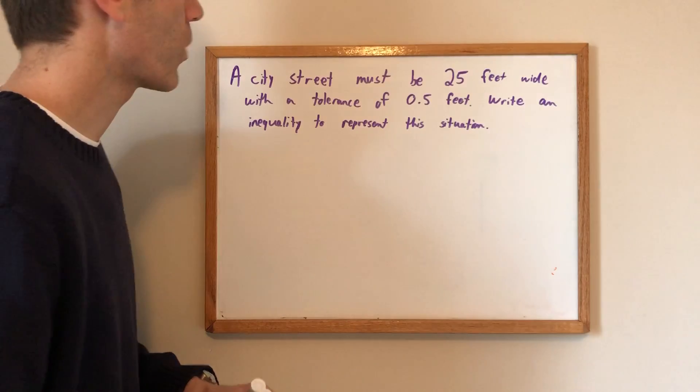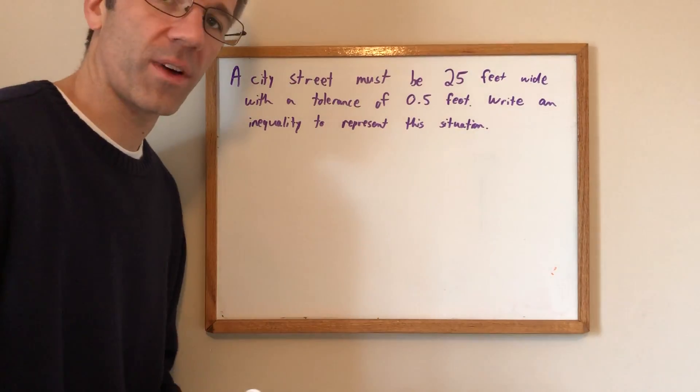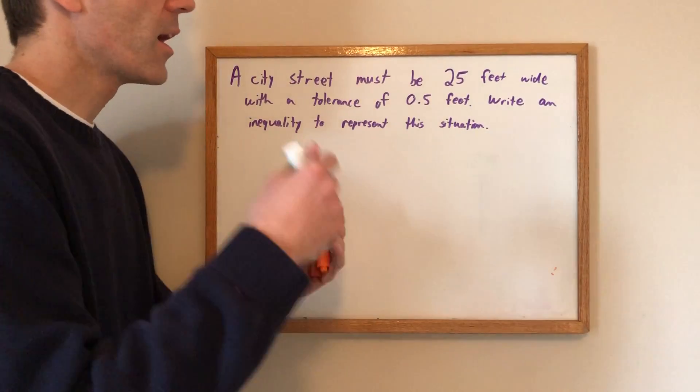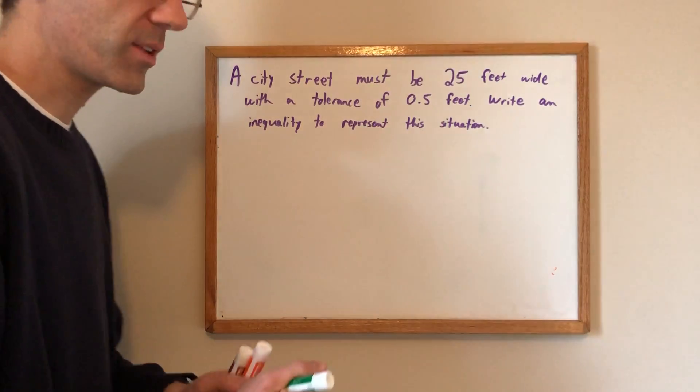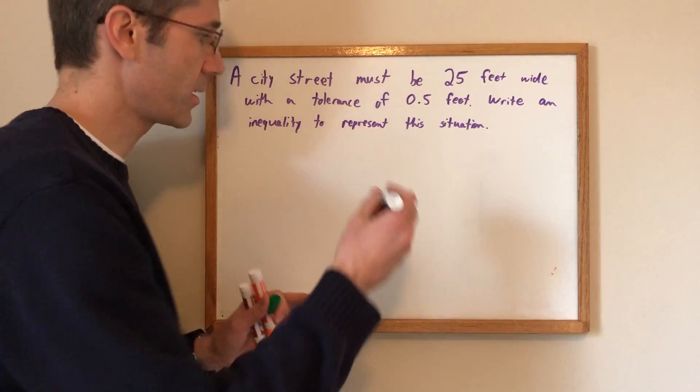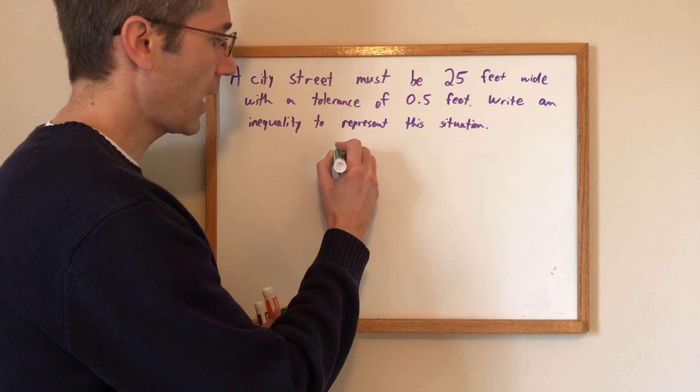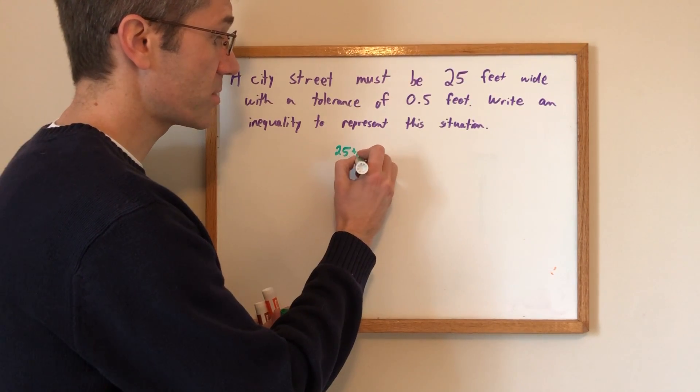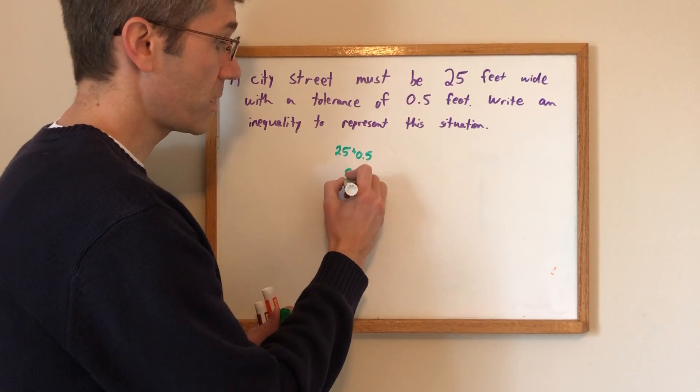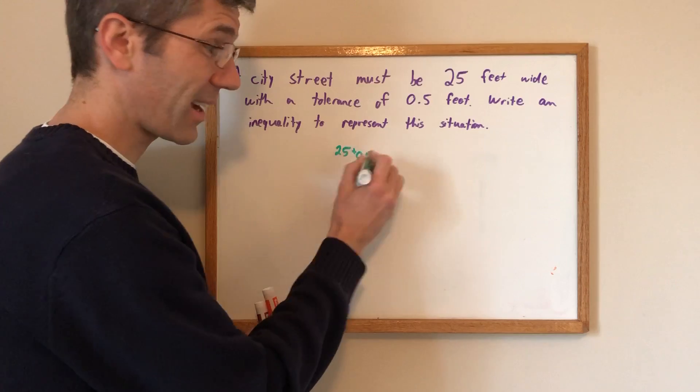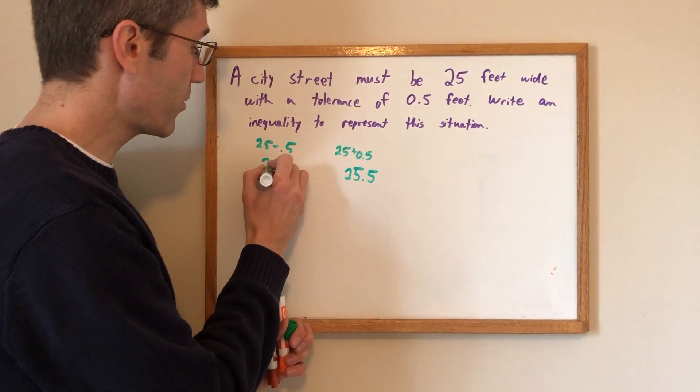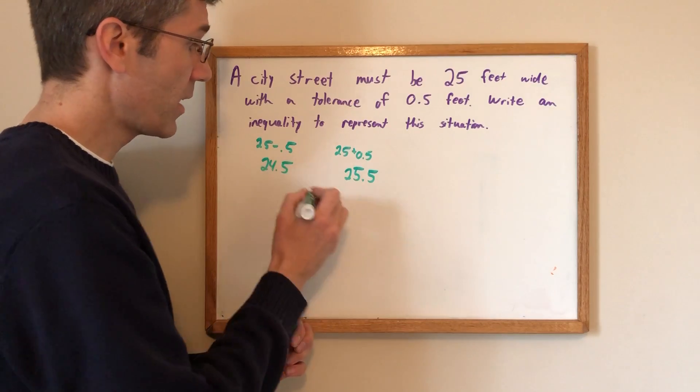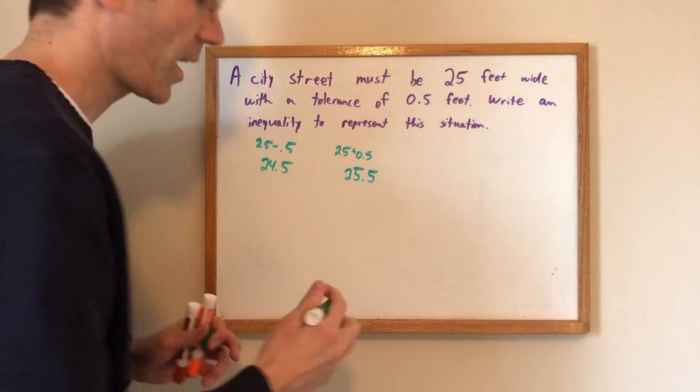So city street 25 feet wide with a tolerance of 0.5 feet, meaning I can be half a foot more than or less than 25 feet. So just doodling our ideas here. I could have 25 plus 0.5 and that would be 25.5. I could have 25 minus 0.5 and that would be 24.5 and it's going to be between those two values.